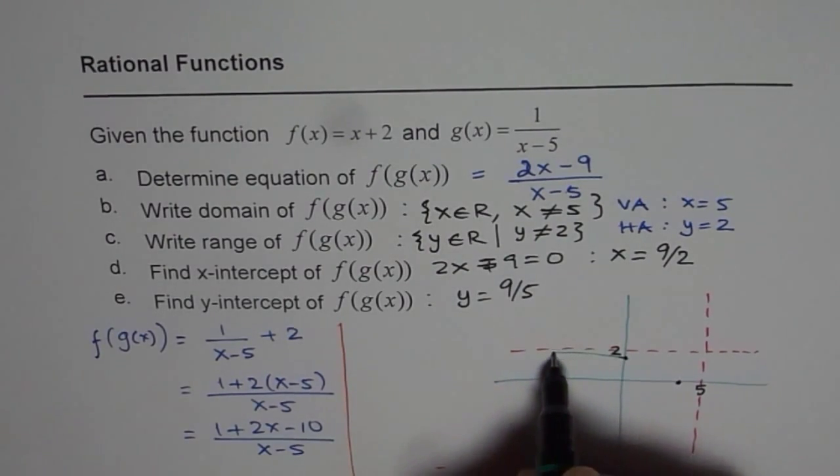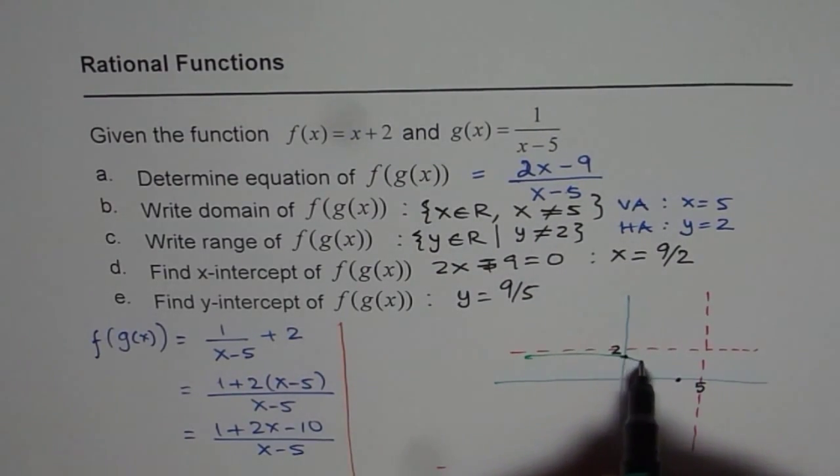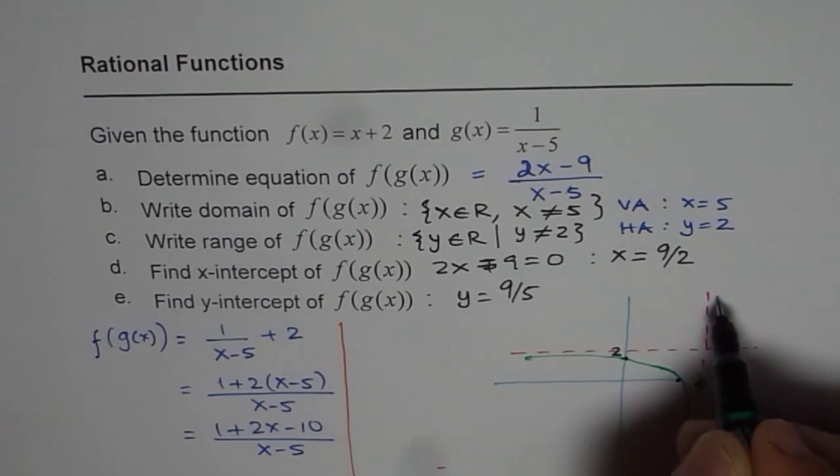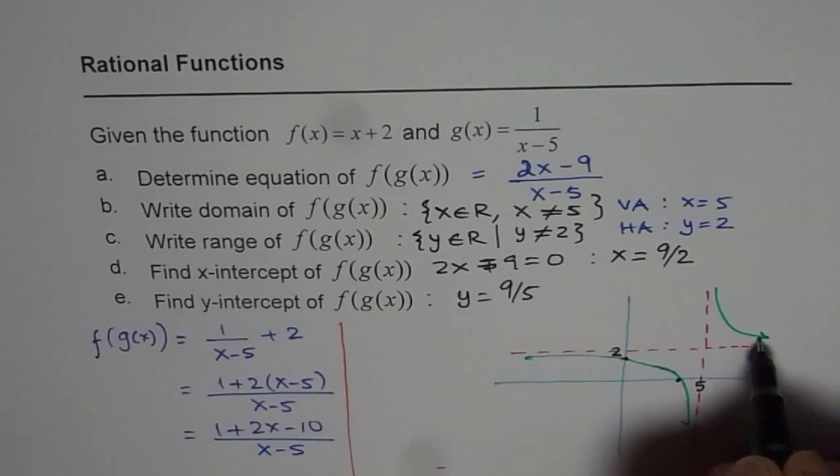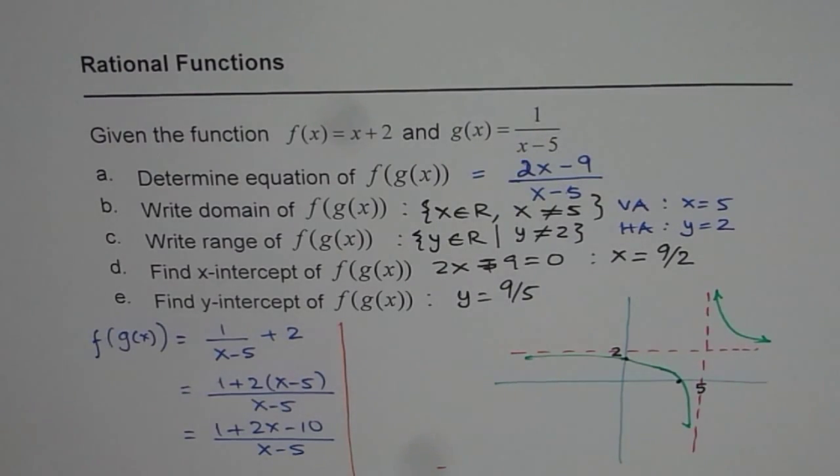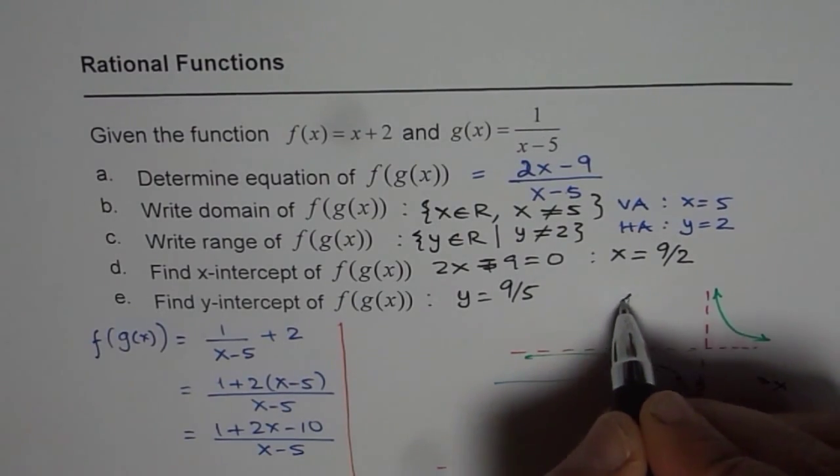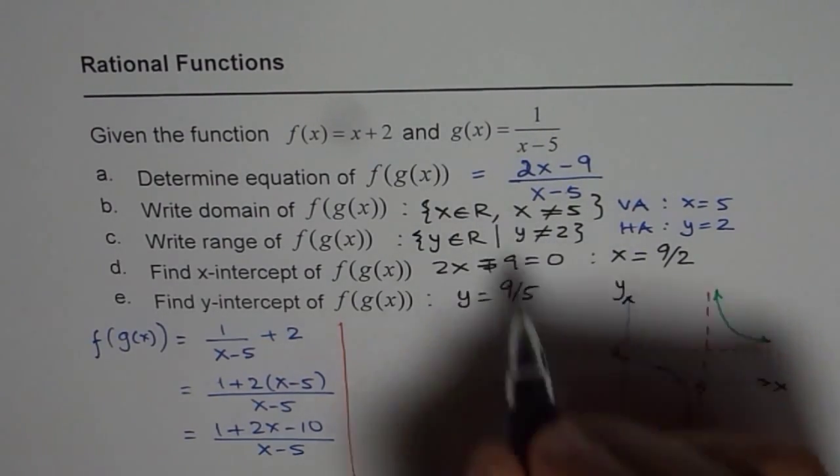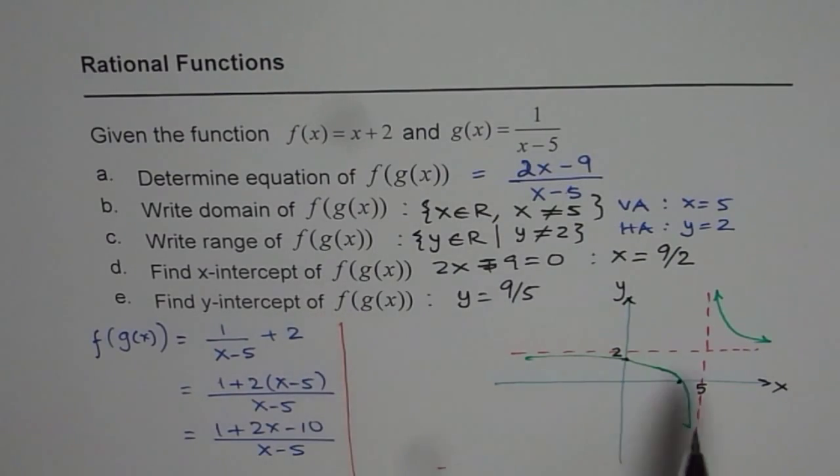Now from this, you can always sketch the graph of your function, which should be something like this. So it is approaching and then it will go through this, kind of like this and like this. So that is how the graph will look like. Approximately, you can sketch the function like this. This is f of g of x.